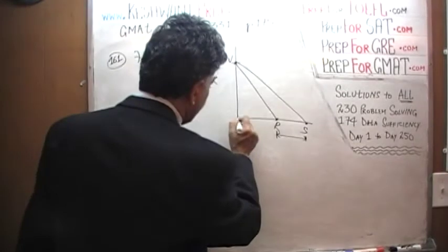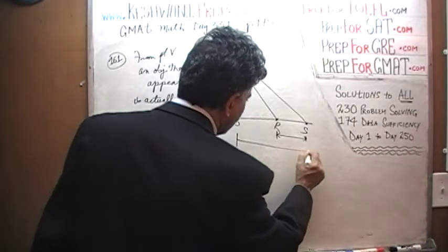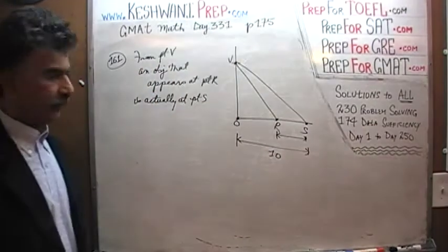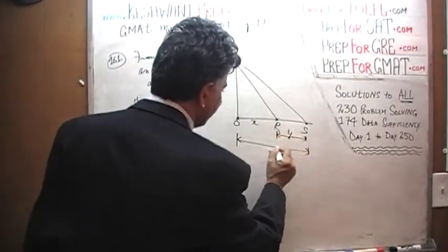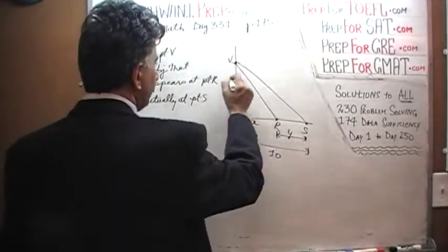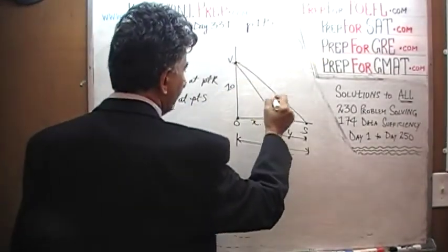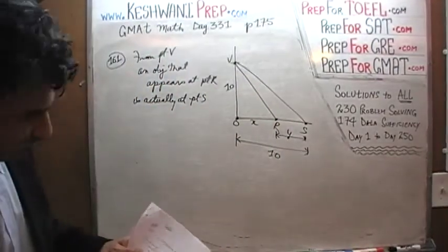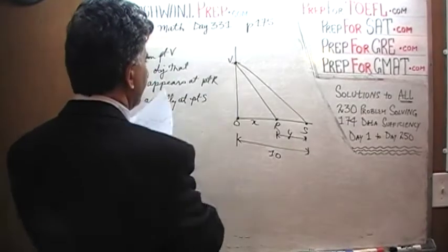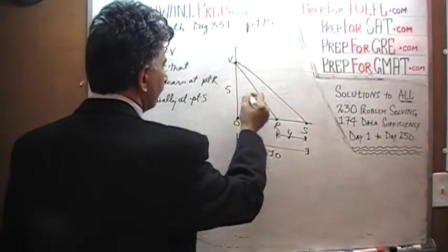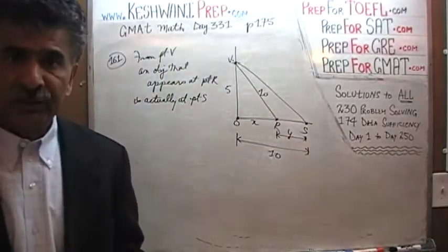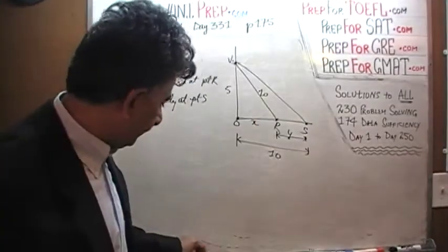They tell us that from O to S is 10. So let's call this distance X and let's call this Y, so we know X plus Y equals 10. They also tell us that O to V is 5 and the distance from V to R is 10. It's a very straightforward, very simple geometry problem — there is nothing to it.